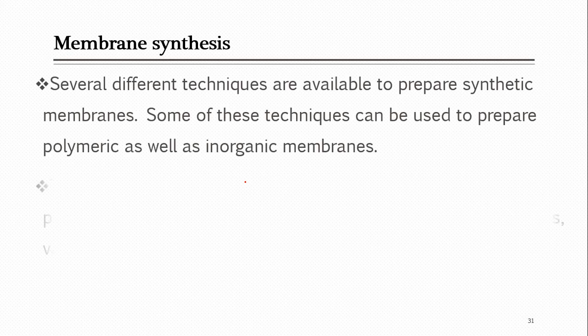To briefly summarize: membrane modules are the arrangement of large surface area membranes for industrial application. There are different module types — flat plate, tubular, hollow fiber, and spiral wound. We discussed each type briefly: how they are formed, how they are arranged, how they look, and for which special applications they are usually used.